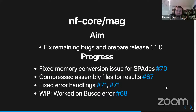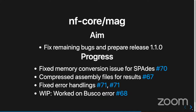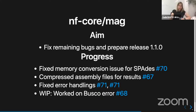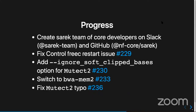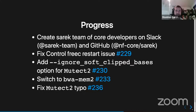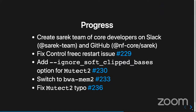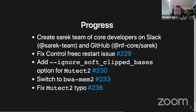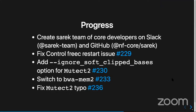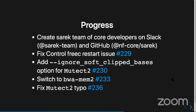We fixed a ControlFREEC issue, fixed issues for Mutect2, added one option for Mutect2, and we switched from BWA to BWA-MEM2 — so we're hoping for significant speed improvement on the mapping steps. The indices haven't changed; BWA-MEM2 provides the exact same results, just faster, so you can still use the old indices. More tests will be done to confirm.